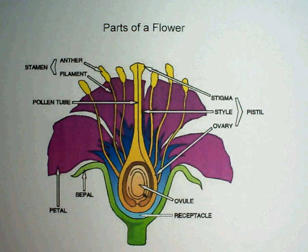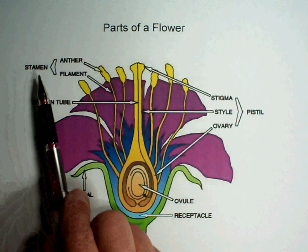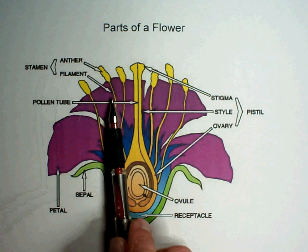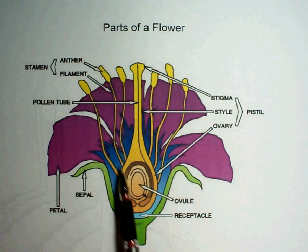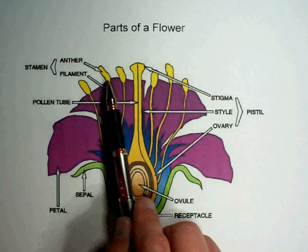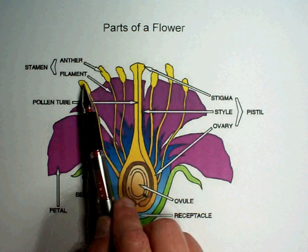The male part of the flower is called the stamen. You have the filament, which are these long things coming up, and then the anther. This is where you'll have pollen.